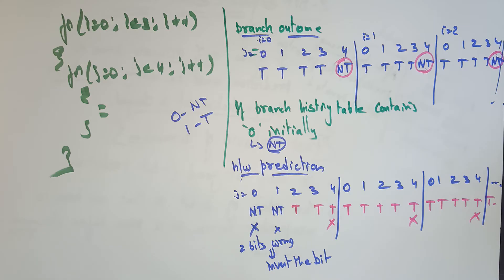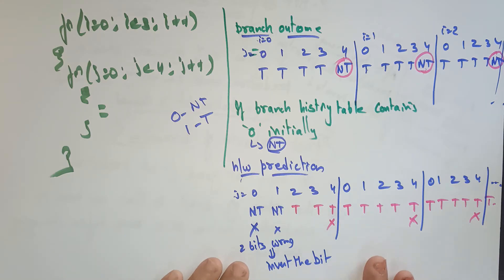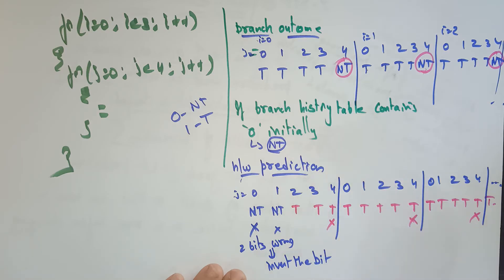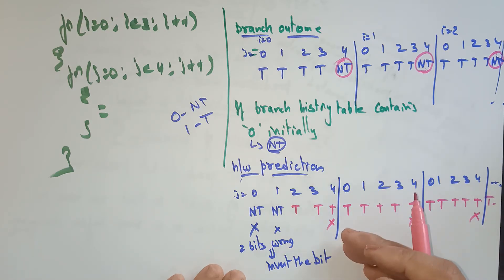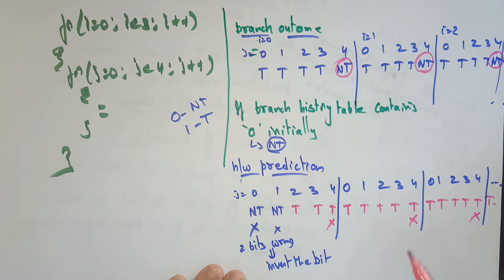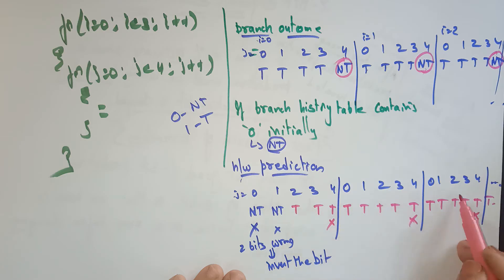So what is observed? Compared to 1-bit predictions, the number of stalls is going to be less in 2-bit prediction.